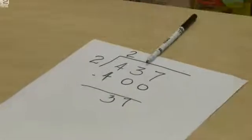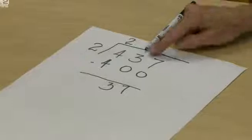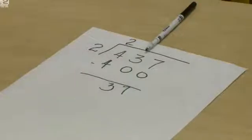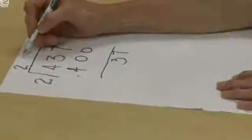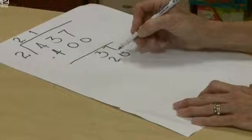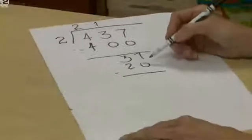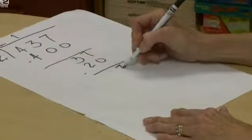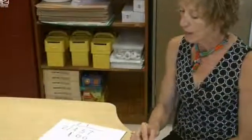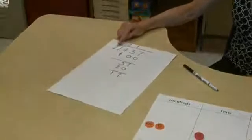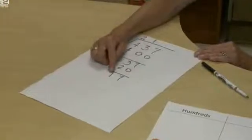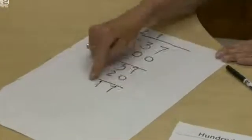Let's move to the next largest place value and ask what do our eyes see. We see that we have three tens. Is that enough to give at least one ten to each of the two equal groups? Yes. So let's put one ten in each group for a total of two tens. Taking two tens away from three tens leaves one ten. So we ask: is that enough to put at least one ten into two equal groups? It's not enough. So we need to unbundle that ten and trade it for ten ones, which will give us a total of seventeen ones.